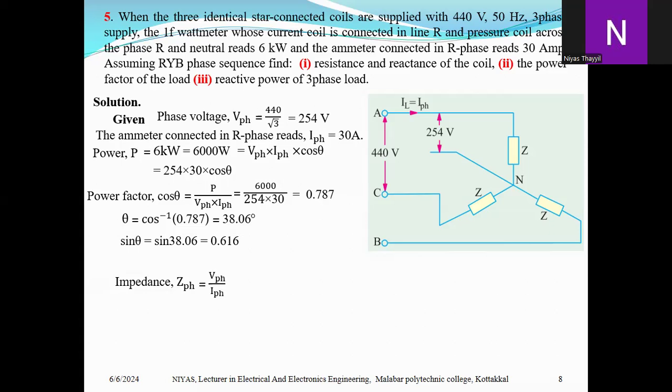Impedance Z_ph equals 254 divided by 30, which equals 8.47 ohms. Power factor cosine theta equals 6000 divided by root 3 times 440 times 30, which equals 0.787.